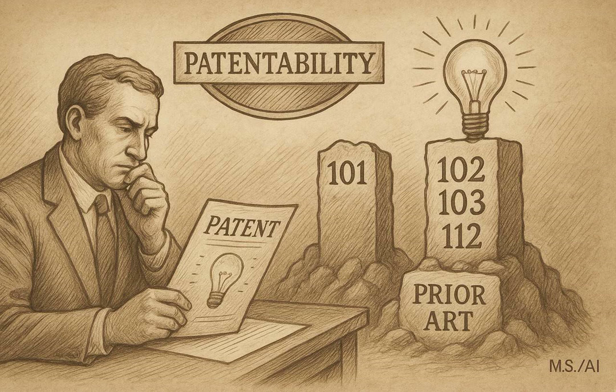Enablement means your specification must teach someone skilled in the art how to make and use the full scope of your claimed invention without needing undue experimentation — too much guesswork or trial and error. The description needs to be a blueprint, clear and complete enough for a skilled person to practice the invention based on what's written, maybe combined with their existing knowledge, but without having to invent it all over again.